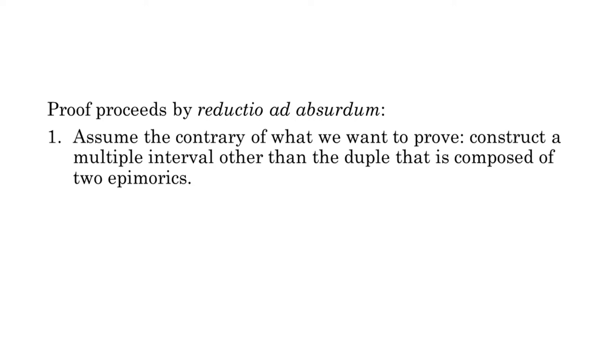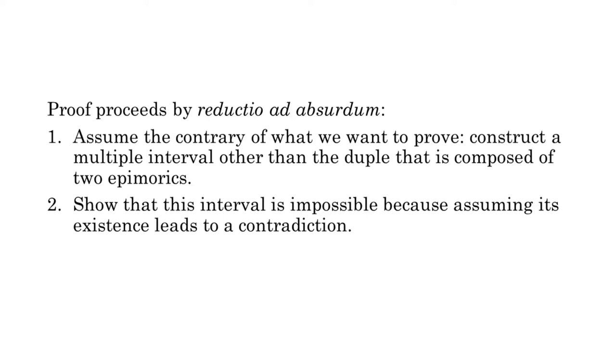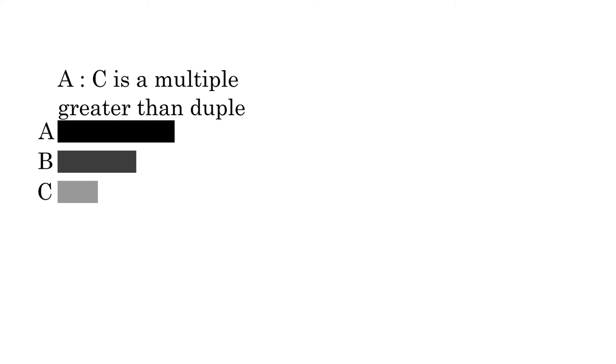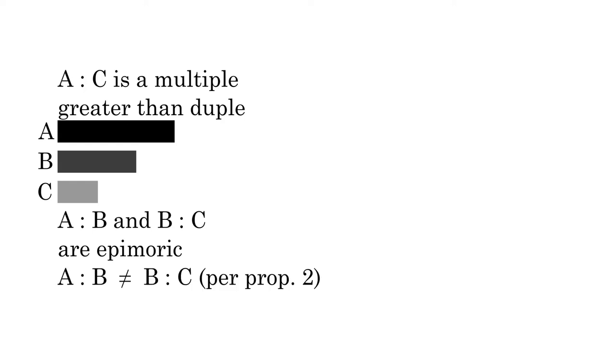The proof is structured as a broad reduction to the absurd. We begin by assuming the contrary of what we want to prove. In the first few steps, we're going to attempt to construct a multiple interval other than the duple that is composed of two epimorics. The rest of the proof will show that this interval is an impossibility because assuming its existence leads to contradictions. Let there be a multiple interval a to c that is not duple. Because the duple interval is the smallest of the multiples, any multiple interval that is not duple must be greater than duple. Let there be a third number b that falls between a and c. Let a to b and b to c both be epimoric. A to b and b to c must also be unequal: if they were both equal and epimoric, they could not form a multiple interval when added together, as we learned in proposition 2.